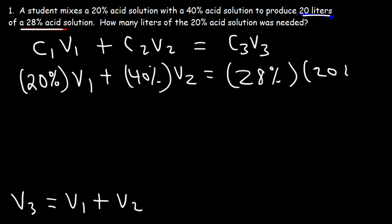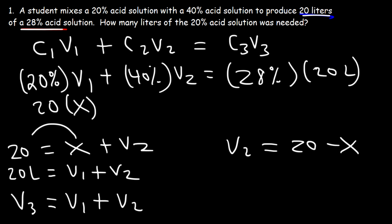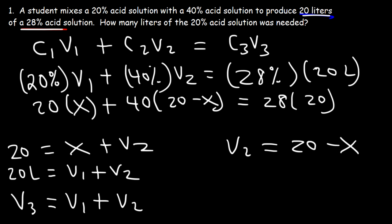Now, 20 liters is equal to V1 plus V2. Our goal is to find V1. So let's call V1 = x — that's what we're looking for. So if V1 is equal to x, then V2 has to be 20 minus x. And so that's what we're going to use for V2 — let's replace it with 20 minus x. Now all we need to do is find the value of x.